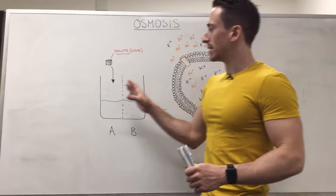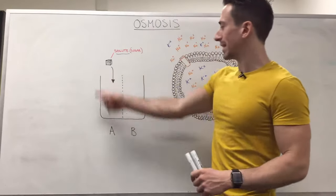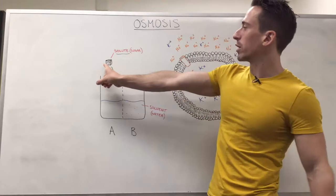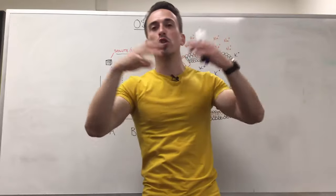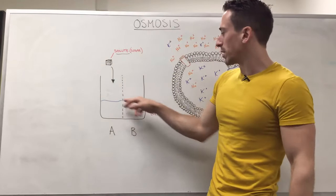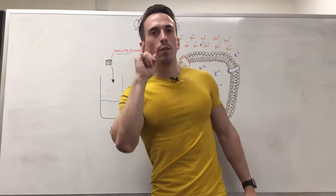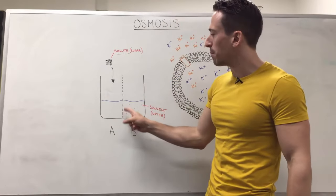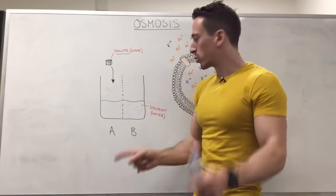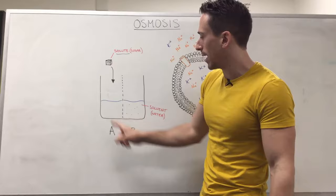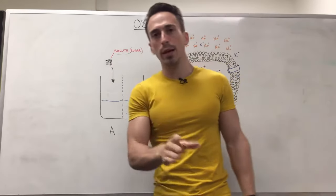Now what I've drawn up here is similar to the diffusion video. I've got a container which has some water. I've got a sugar cube which we said is made up of solutes and this water is the solvent. But what I've changed here is I've put in a membrane or a barrier between one side which we'll call side A and another side which we'll call side B.